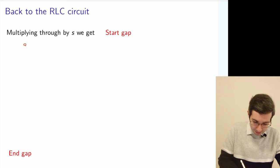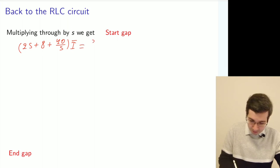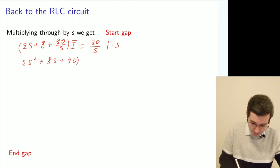So we have (2s + 8 + 40/s) times i bar equals 30/s. We multiply it by s. And that gives us 2s² + 8s + 40 i bar = 30.